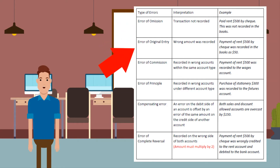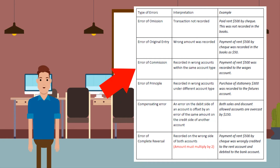Next, error of original entry. This is when the wrong amount was recorded. An example would be: the payment of rent of $500 by check was recorded in the books as $50. Now, error of commission. This is when the amount was recorded in the wrong accounts within the same account type. An example would be: the payment of rent of $500 was recorded to the wages account.